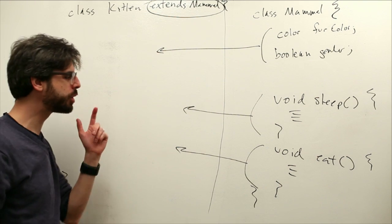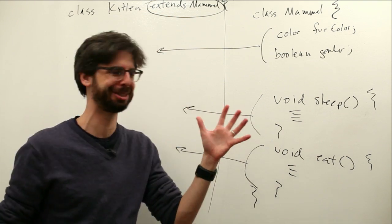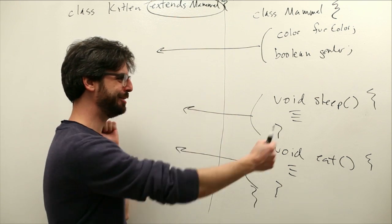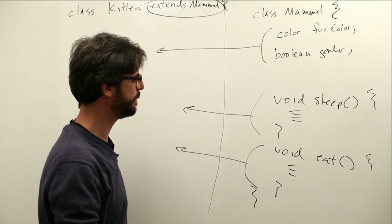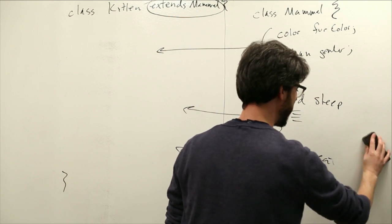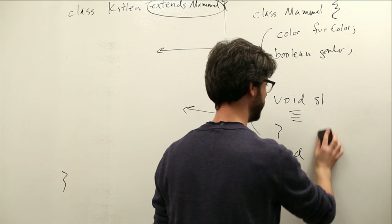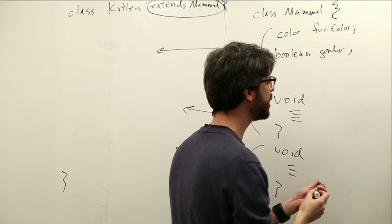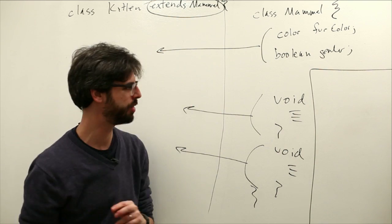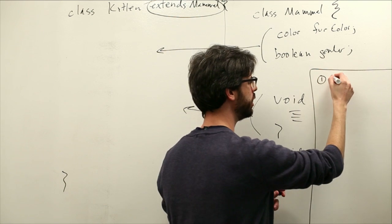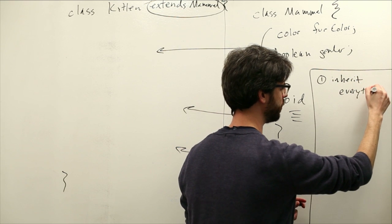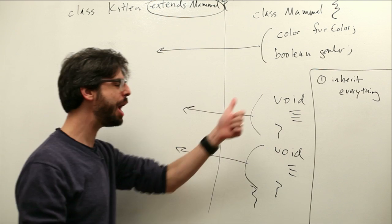So we have to ask ourselves why are we doing this in the first place? We're doing this not because we want kitten to be an exact replica of a mammal. We want kitten to inherit everything that a mammal has but also have some of its own things. So for example, we might add, so I want to make a list. I'm going to carve out a little space over here in the corner.